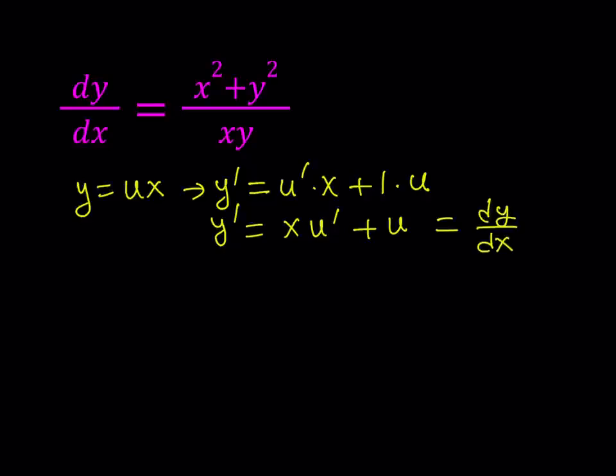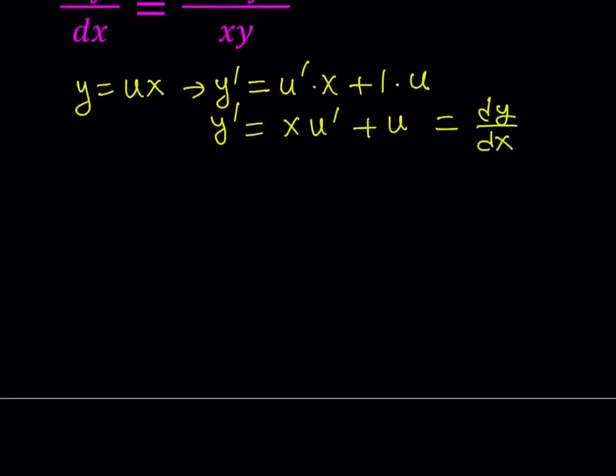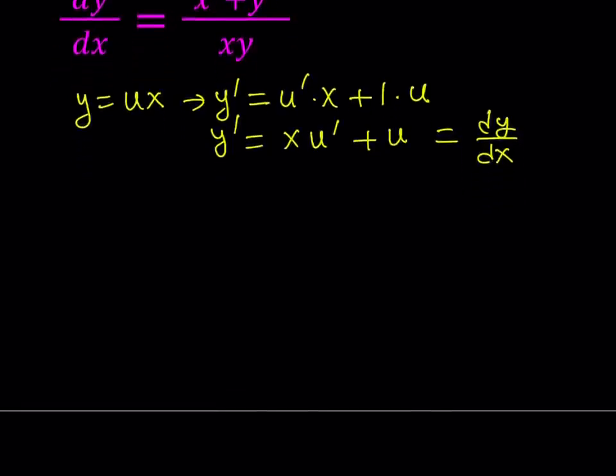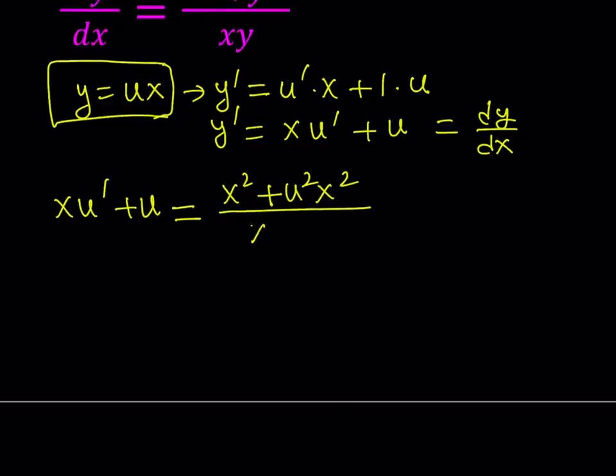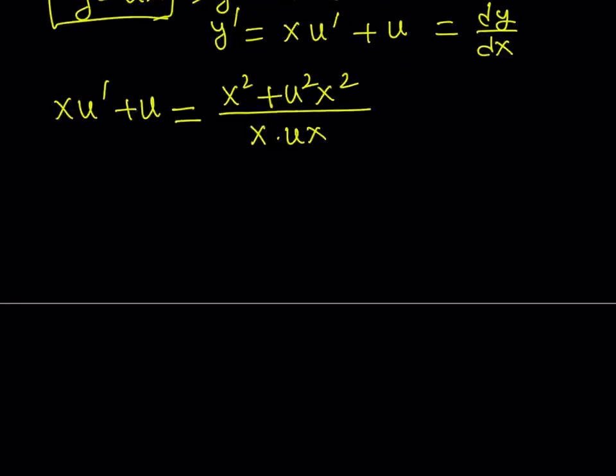Now let's go ahead and see what happens on the right hand side when we do the replacement. So left hand side I have x u prime plus u. And on the right hand side, I have this expression, this ratio. x squared is just going to stay as is and I'm going to replace y with ux. Therefore, when I square both sides, it's going to become u squared x squared. And the same thing at the bottom, I'm going to multiply x by y, which is ux.